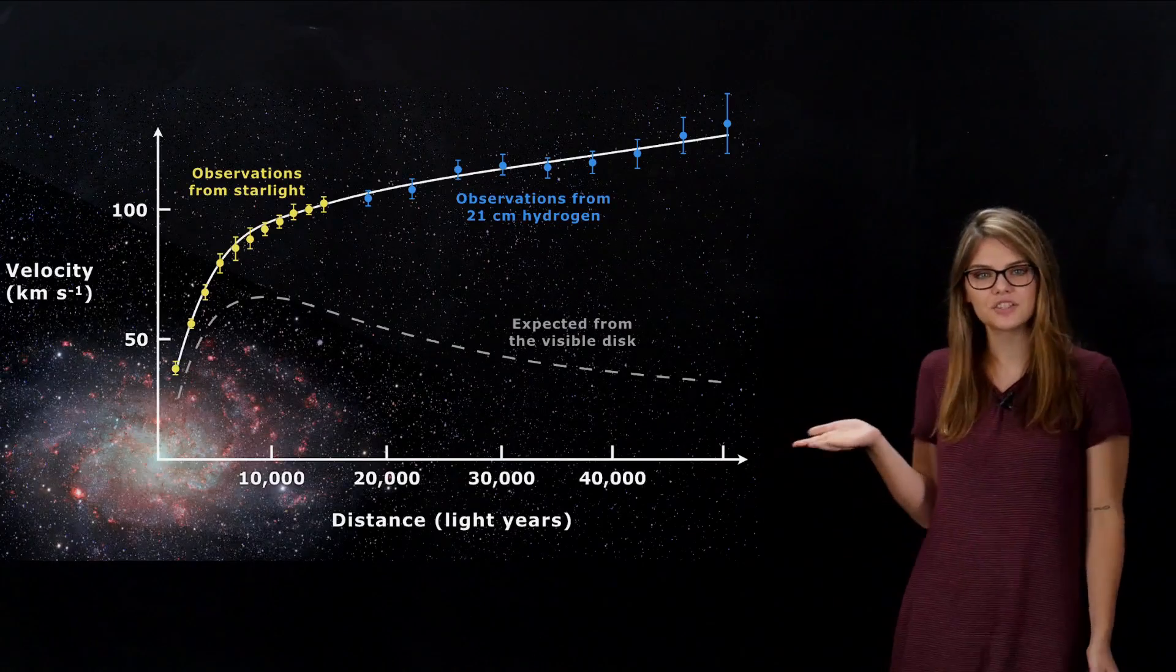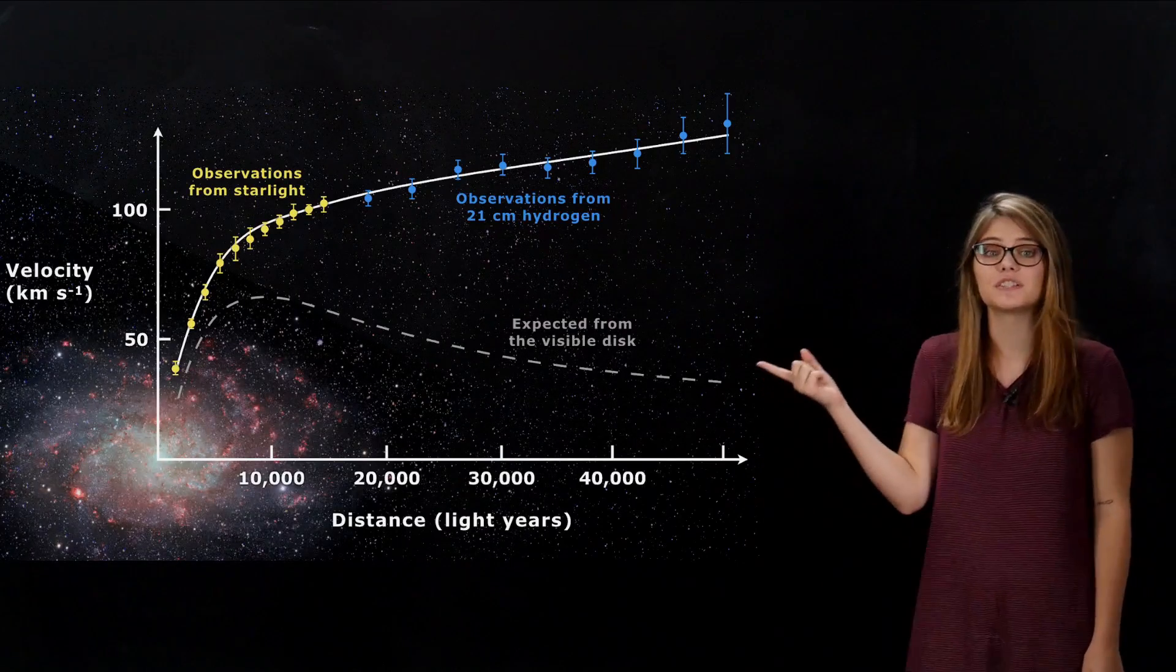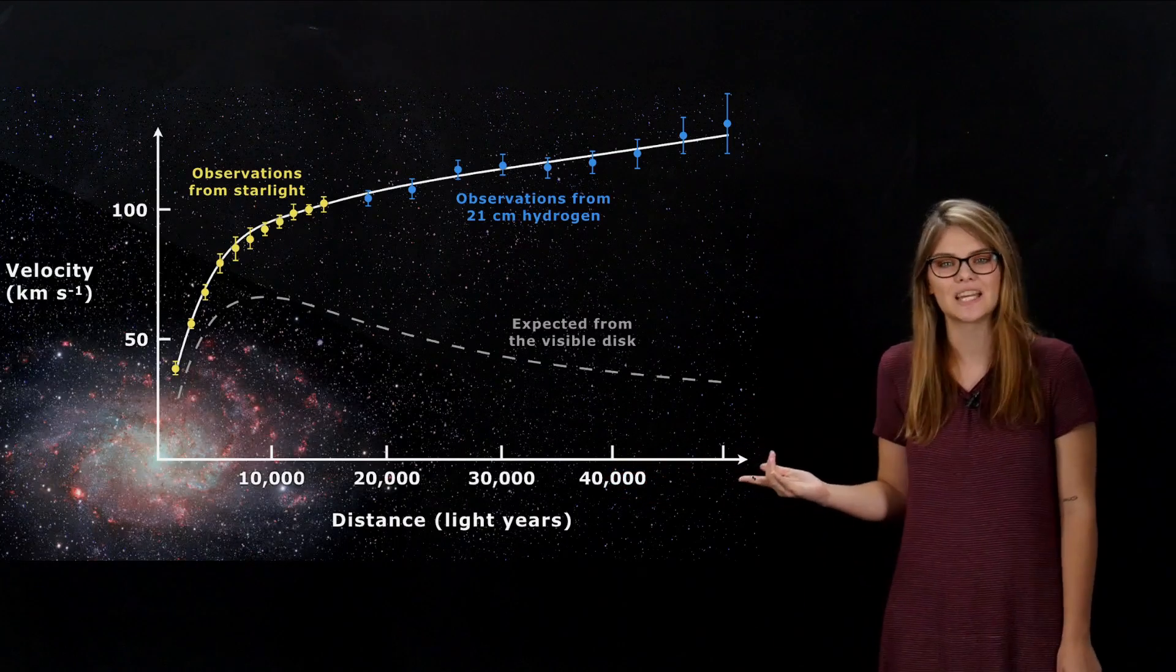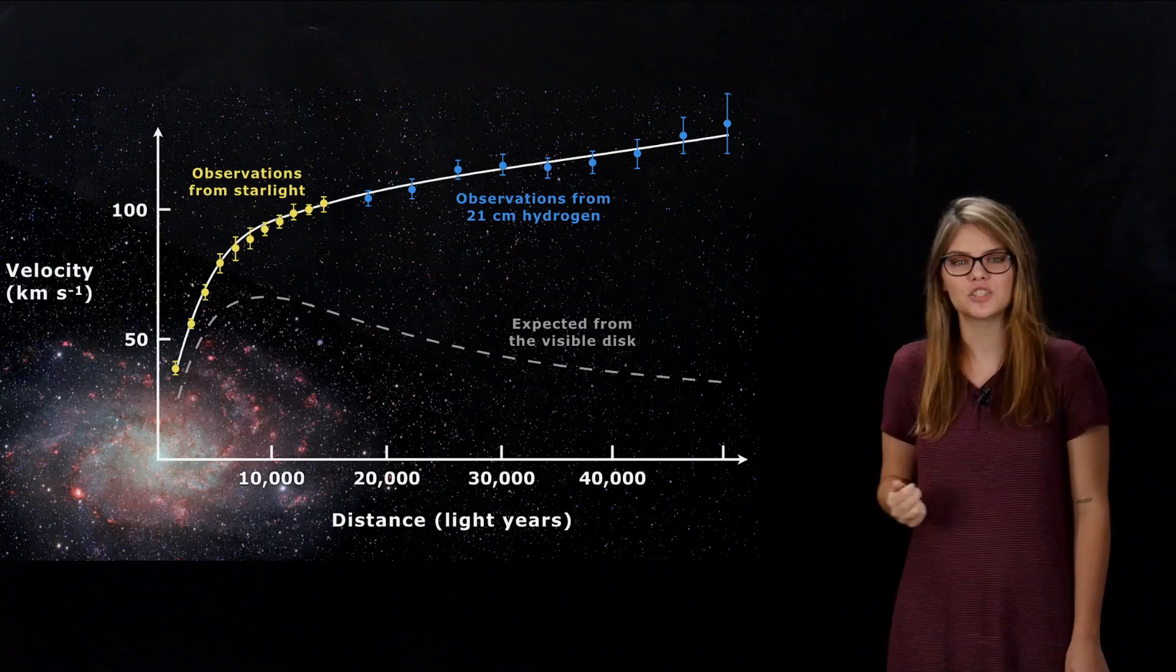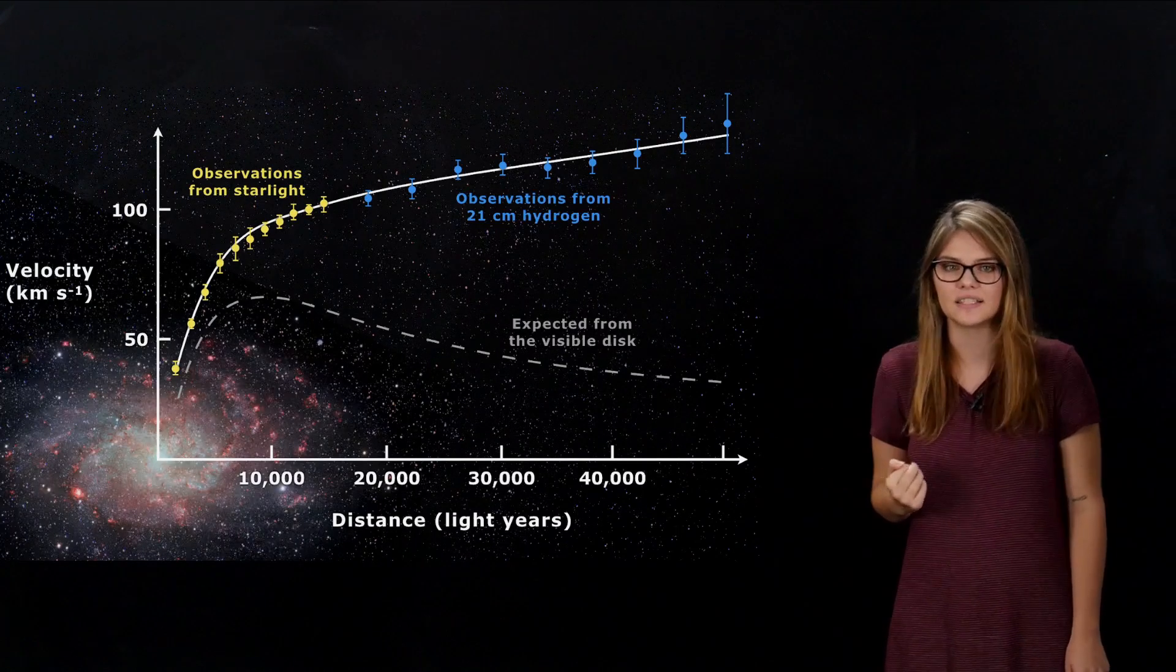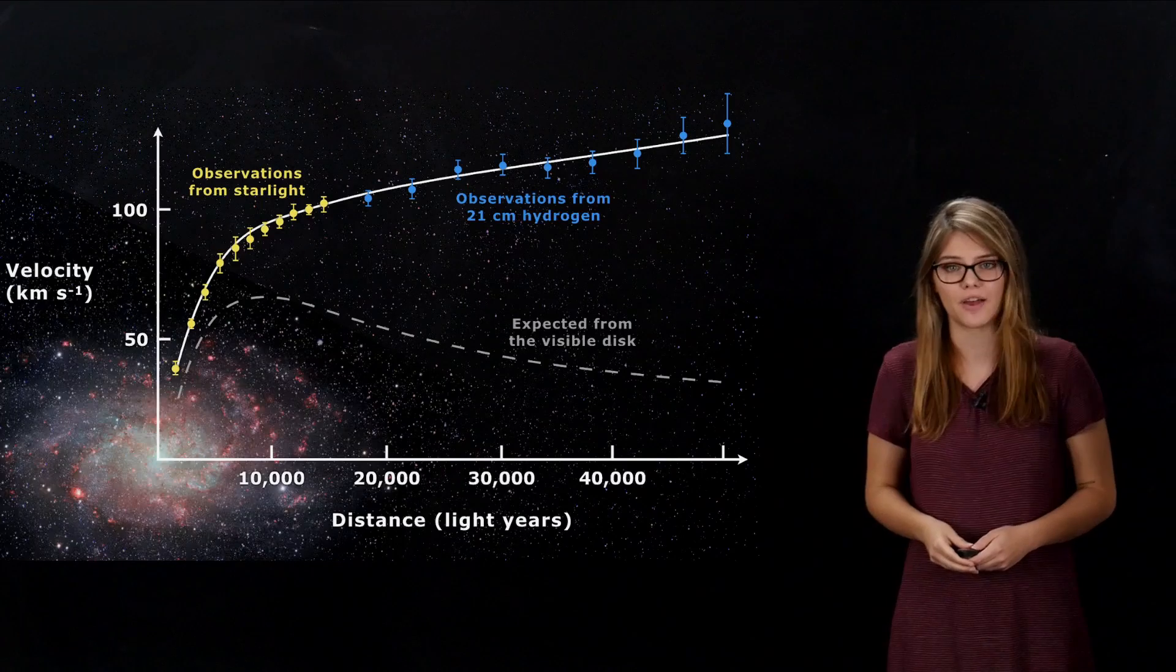Here, you can see an actually observed galaxy rotation curve versus our predictions. You may notice that the farther you go out from the galaxy center, the faster these stars are actually rotating. This suggests that there's some type of matter that we can't see on the outskirts of these galaxies, which we've dubbed the dark matter halo.